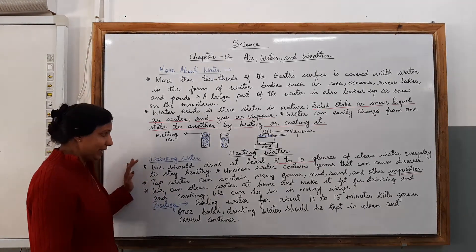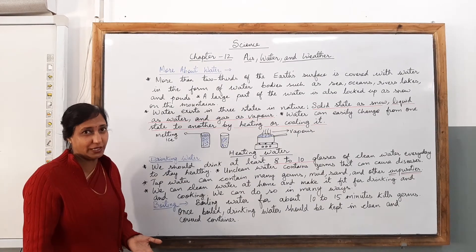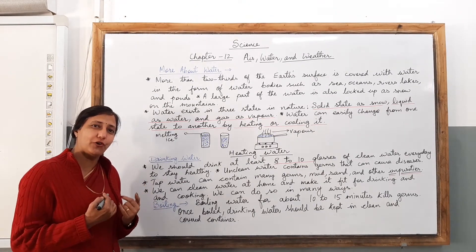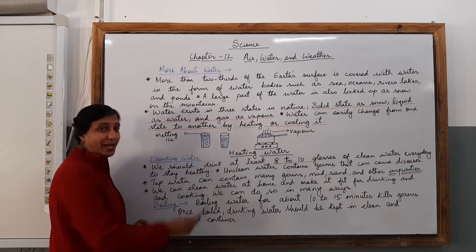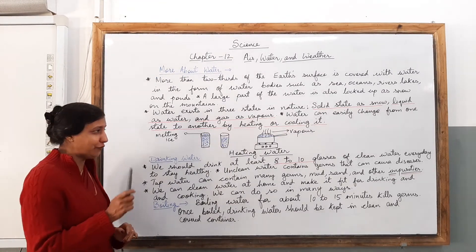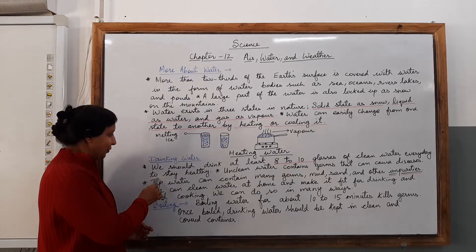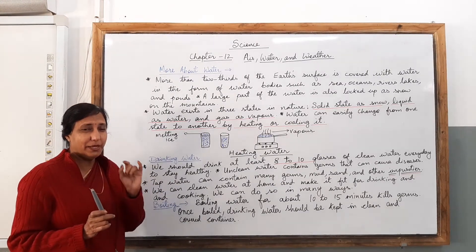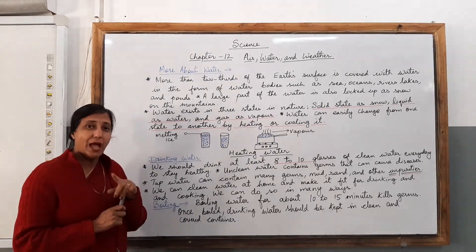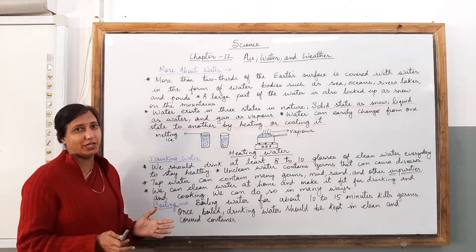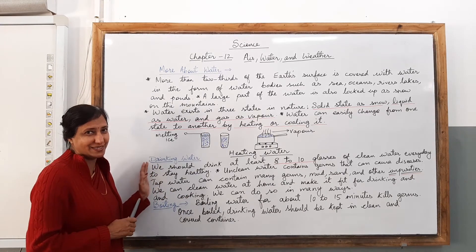Moving ahead, let us learn which water is suitable for drinking and how we can make water suitable for drinking, and how much water you should be consuming for your own body. We should drink at least 8 to 10 glasses of clean water every day. Please make a habit of drinking 8 to 10 glasses of water in a day for keeping a healthy body. Please try to make a resolution to drink at least 8 to 10 glasses of water in a day to maintain a healthy body.